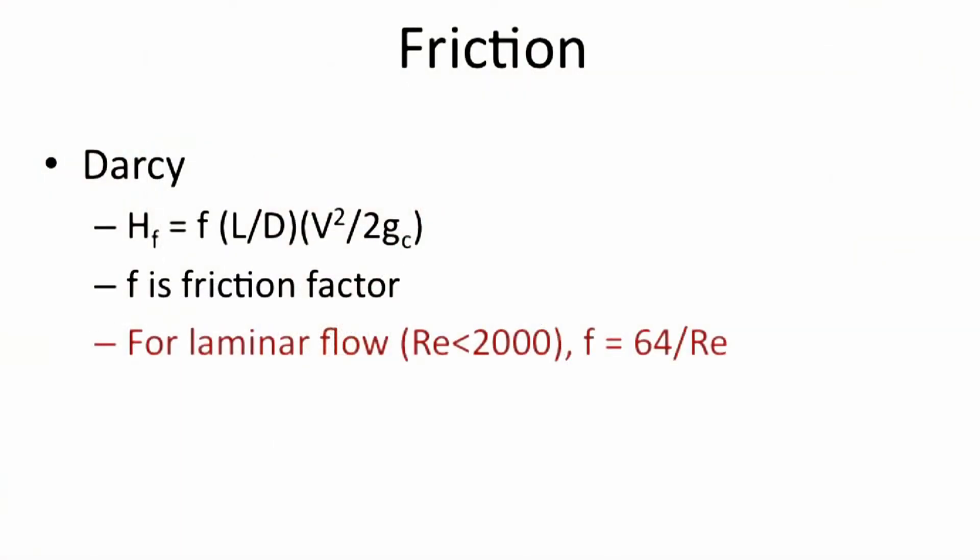For laminar flow, Reynolds number is less than 2,000. The friction factor is simply 64 divided by the Reynolds number.